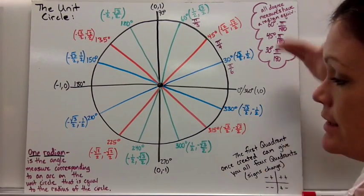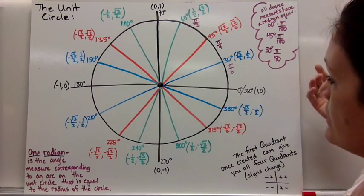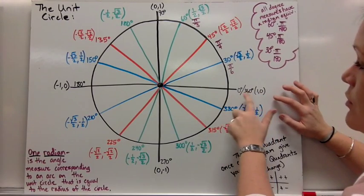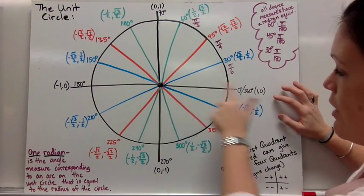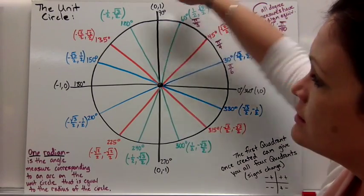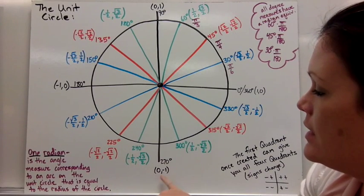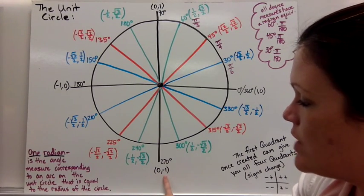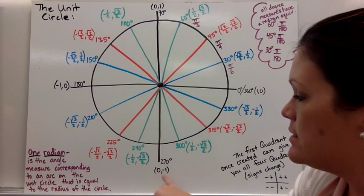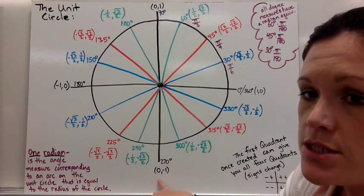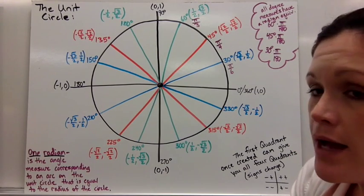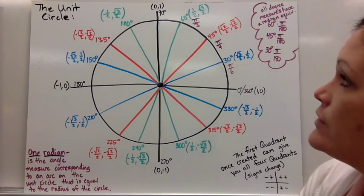So take the time to write this down nice and neat. Notice I also added the coordinates of these four corners here. You have 0 or 360 is located at 1, 0. 90 is at 0, 1. 180 is negative 1, 0. And 270 is 0, negative 1. So if they asked you, what is the cosine of 270 degrees? It's the x value, which is just 0. So that would be the answer to that question. Take the time, like I say, write this as neat as you can in your notes.